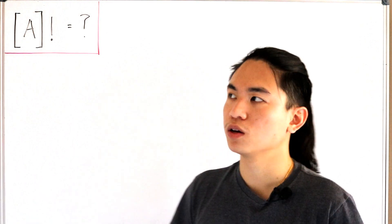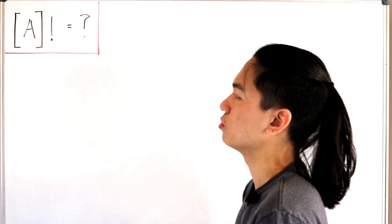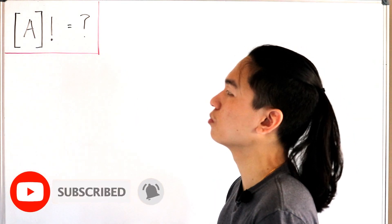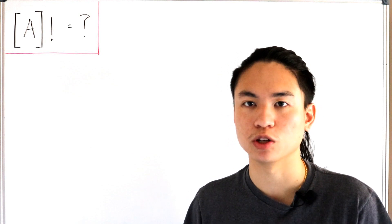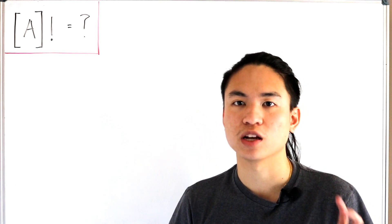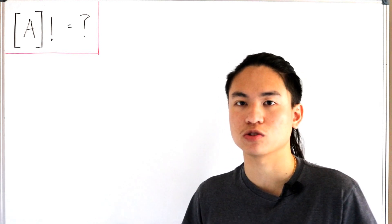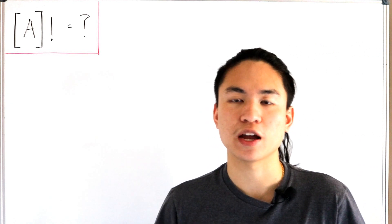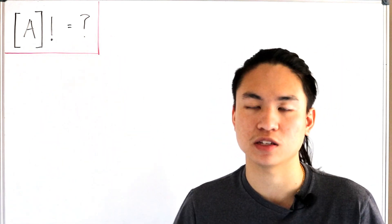Welcome back. Today we want to find the factorial of matrix A, where A is a diagonalizable matrix, and see if there is a closed form. Because there is a factorial existing alongside the matrix A, there's going to be a relationship with the gamma function. We'll also be using the exponential matrix — there's an example in the description below. Note that a diagonalizable matrix A requires both a diagonal matrix and an invertible matrix.